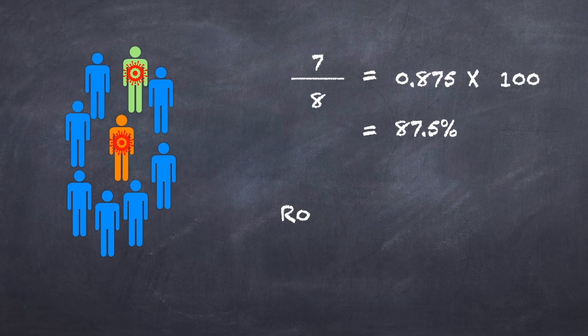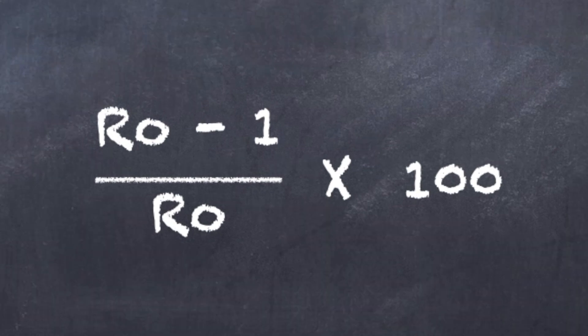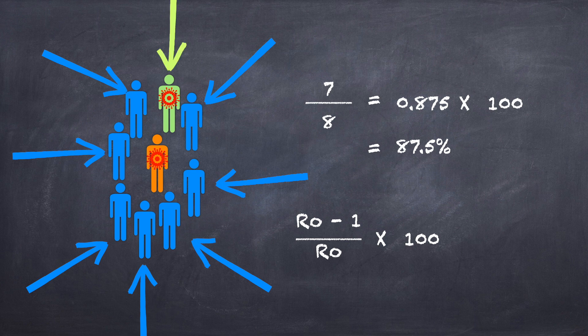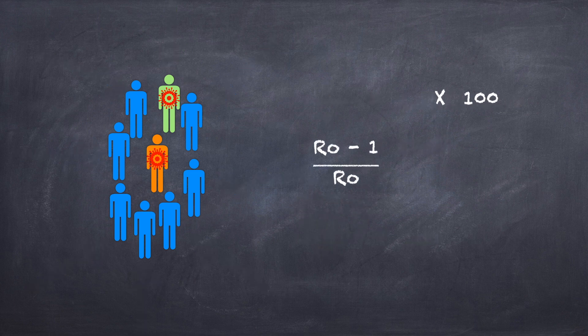And of course, this works for any R naught, right? It's simply R naught minus one over R naught times 100. In other words, if all the people that would have gotten the disease are not immune, with the exception of one, hence the minus one, then just one person will get the disease. And that's the definition of R equals one, our watershed threshold for beating the epidemic.